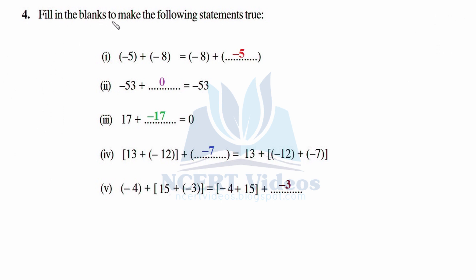Question 4: Fill in the blanks to make the following statements true. The first part shows a number just commuting, so we use the commutative property — integers are commutative over addition — therefore the answer is minus 5. For the next part, what should be added to minus 53 to get the same number? We use additive identity, which is zero for every integer.